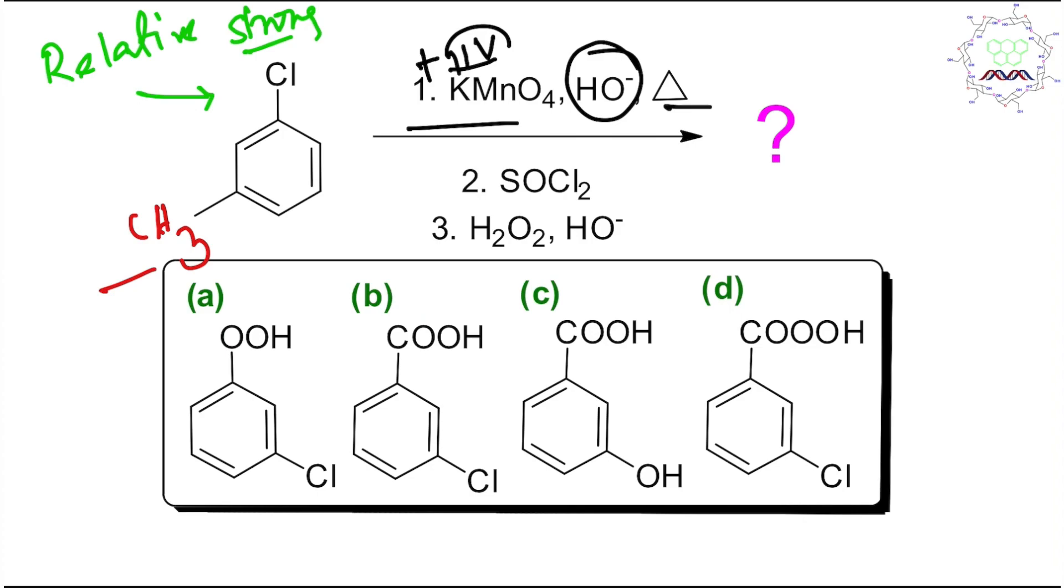Students, it's written in such a way that please don't get confused. Now if this question is asked in your exam, how can you solve in less than 30 seconds? First of all, KMnO4 oxidation is nothing but side chain oxidation, you need to understand point number one.